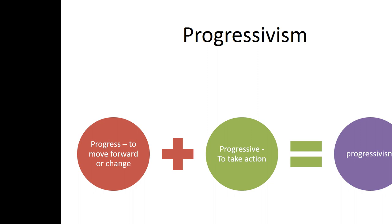To give you an official definition, the Progressive Movement is a movement in the early 20th century which was aimed at correcting social injustice, reforming government, and restoring economic opportunities for all Americans. Those are the three main things it sought to do, and we're going to go through four specific goals of the Progressive Movement.